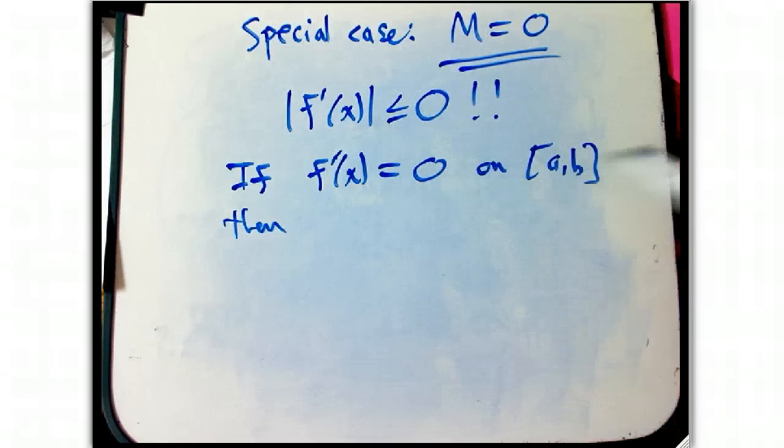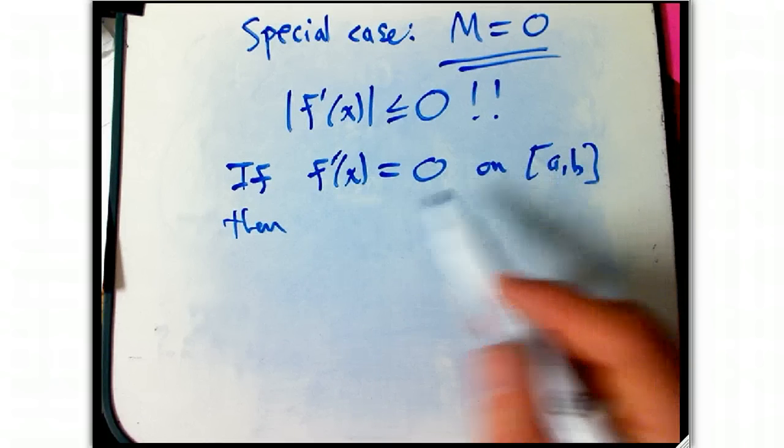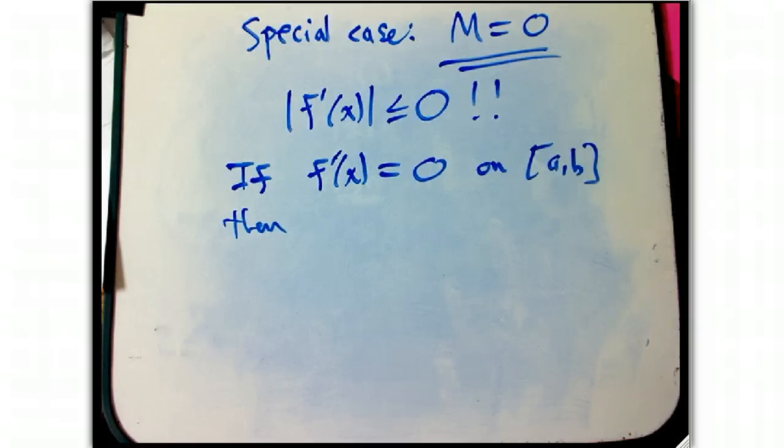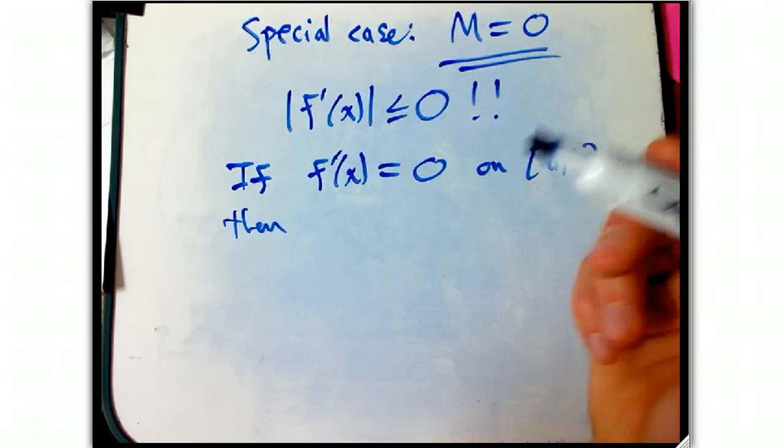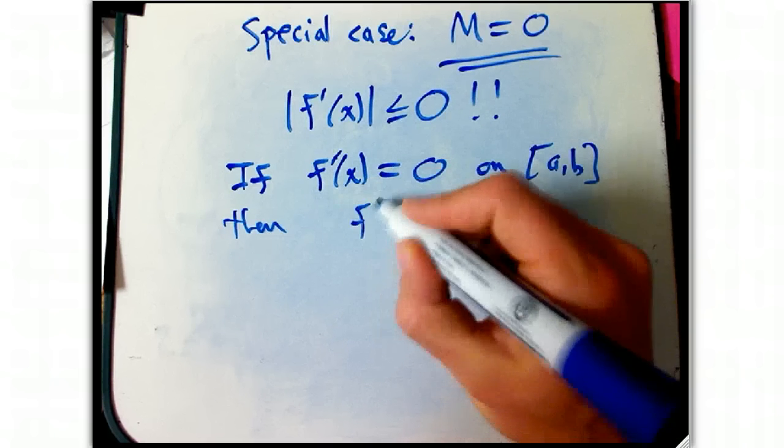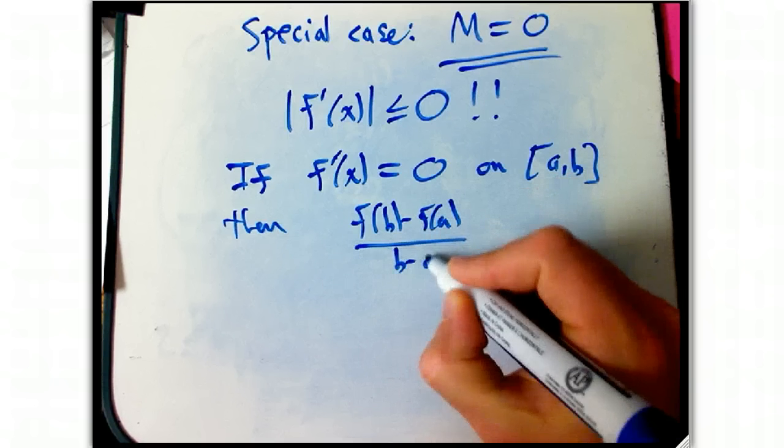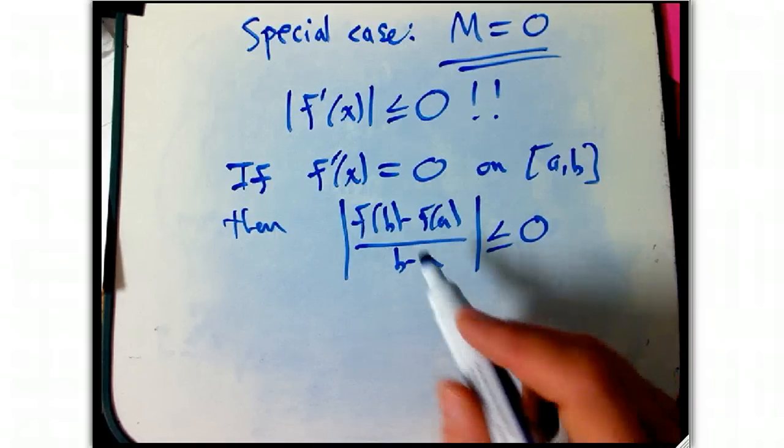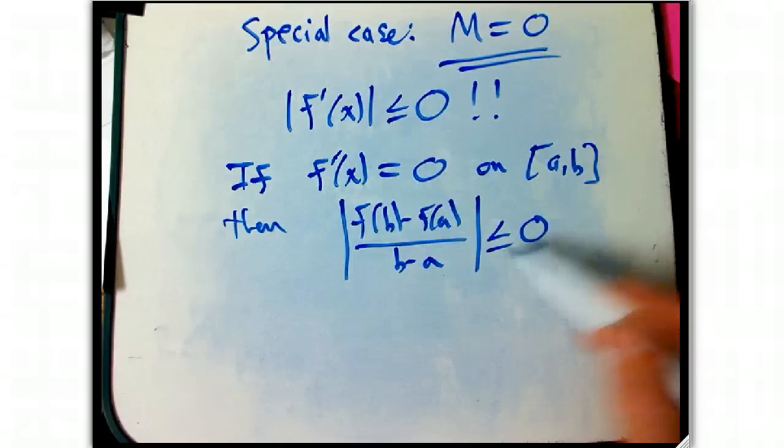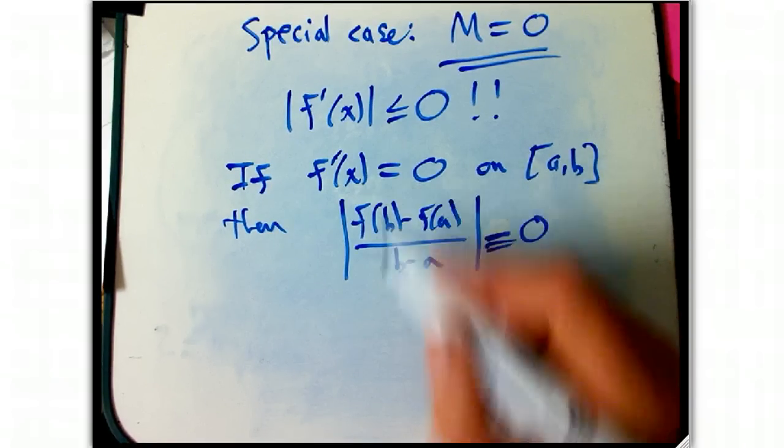Then, well, we've known for a long time intuitively what's supposed to happen here. If the slope is everywhere 0 on an interval, the function's supposed to be constant. But before the mean value theorem, we didn't actually have a precise thing that really guaranteed that. But that's what it says now. Then, let's just see what the corollary says. It says f of b minus f of a over b minus a. The size of that is less than or equal to 0. Well again, this is a non-negative number. The only way it can be less than or equal to 0 is if it's equal to 0.